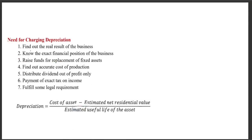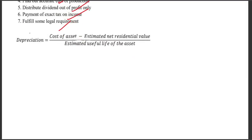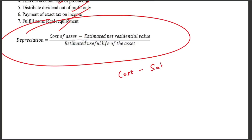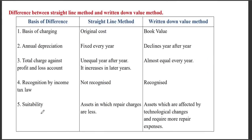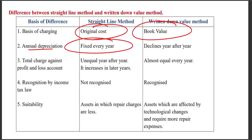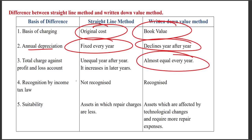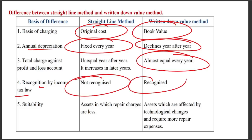The objectives of providing depreciation include showing a true financial position, enabling replacement of fixed assets, determining actual cost and income, distributing dividend from profit, and meeting legal requirements. The formula is: cost minus salvage value divided by life of the asset. The straight line method charges a fixed equal amount each year based on original cost, whereas the written down value (WDV) method charges depreciation on the book value, resulting in unequal but decreasing charges. The WDV method is recognized for income tax purposes, and is more suitable when repair charges increase over time.